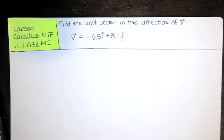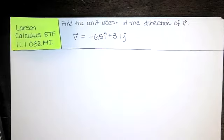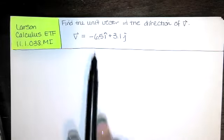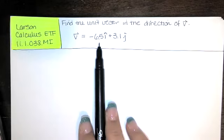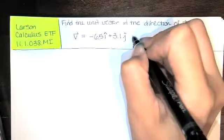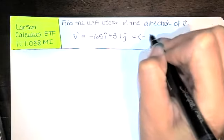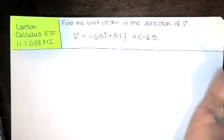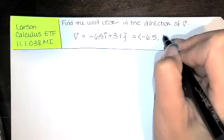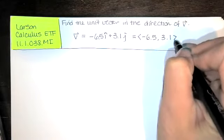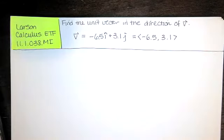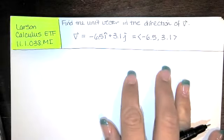We're asked to find the unit vector in the direction of a given vector v, and this vector is given in terms of standard unit vectors i-hat and j-hat. I personally prefer component form, so I will write it this way. The x component is negative 6.5, the y component is 3.1. I think most students actually know how to do this.